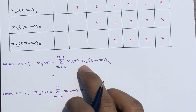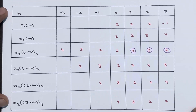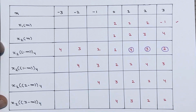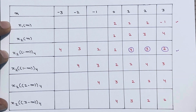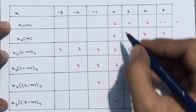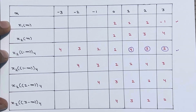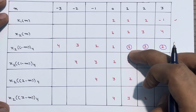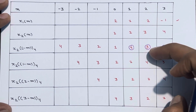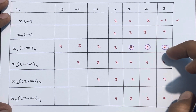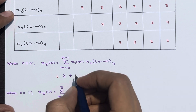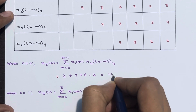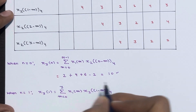Computing x3(0): multiply x1(m) and x2(-m) element-wise and sum. We get: 2×1 + 1×4 + 2×3 + (-1)×2 = 2 + 4 + 6 - 2 = 10. So when n=0, x3(0) = 10.